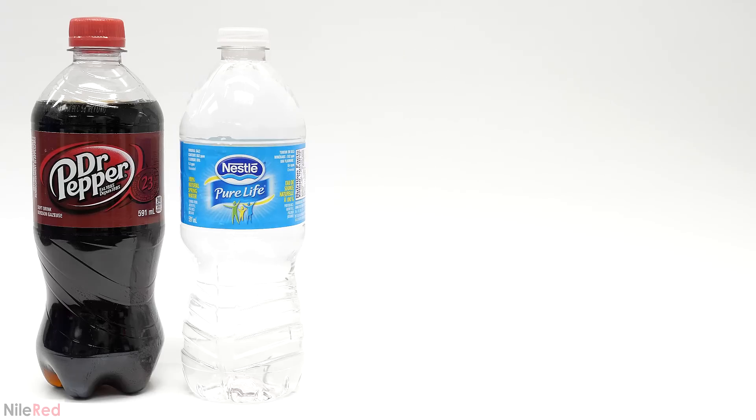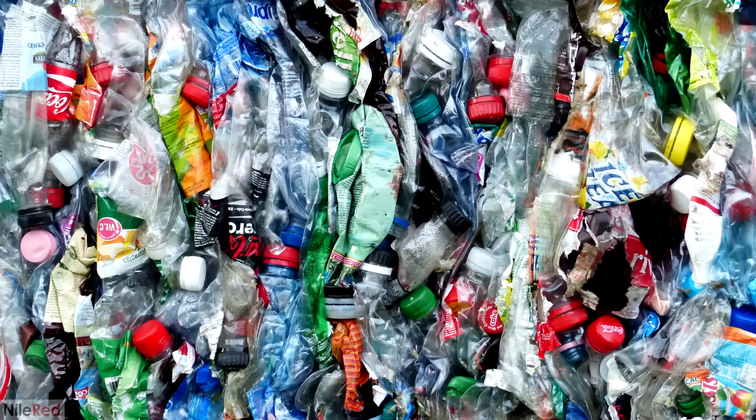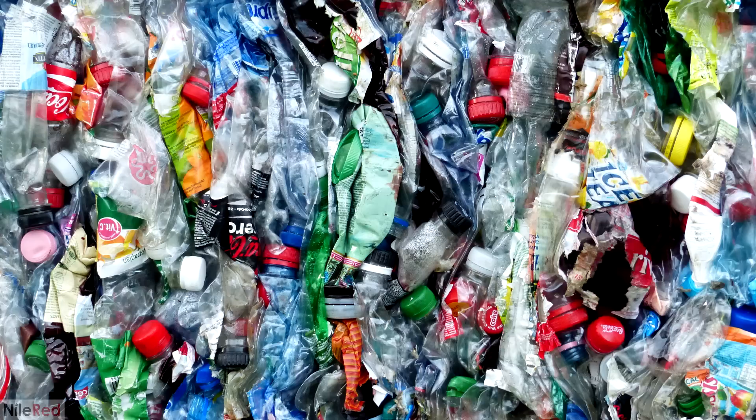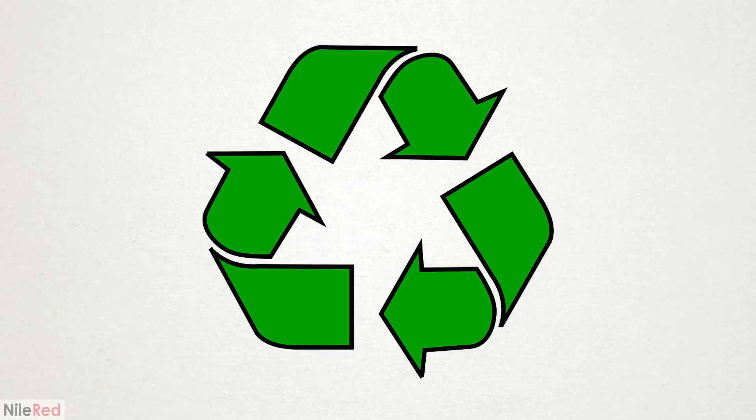Most plastic water and soda bottles are made from a polymer called PET, which stands for polyethylene terephthalate. It's a very useful and versatile plastic, but every year millions of tons of it are produced, and it represents a huge amount of waste. A small portion of it is recycled though, and it's generally done in two main ways, either mechanically or chemically.